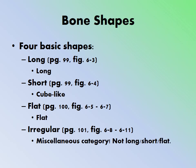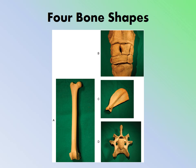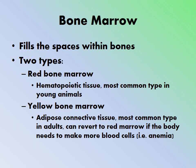There are four basic bone shapes. Long bones include the femur and humerus. Short bones are cube-like, such as the carpal bones. Flat bones include the scapula and pelvis. Irregular bones are a miscellaneous category for bones that don't fit the other three shapes — for example, vertebrae. A diagram shows each type: A) long bone, B) cube-shaped bone, C) flat bone, and D) a vertebra representing irregular bones.